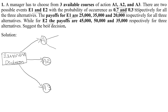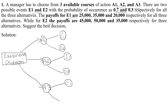For each of the three alternatives A1, A2, and A3, we draw two branches: E1 and E2. So we write E1 and E2 under each alternative. E1 and E2 also have a probability of occurrence of 0.7 and 0.3 respectively, so we write 0.7 next to each E1 branch and 0.3 next to each E2 branch for all three alternatives.